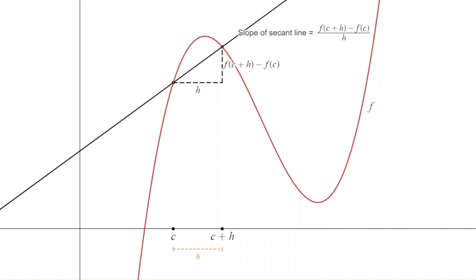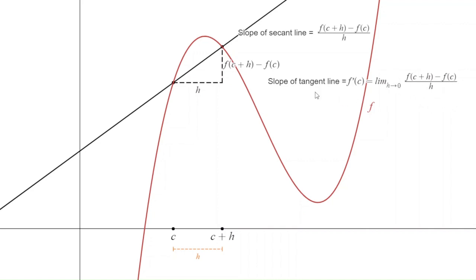To find the slope of the tangent line, we take the limit as h approaches 0 of this expression. As h approaches 0, the second point moves closer and closer to the first point — the horizontal distance between them approaches zero. So the slope of the tangent line, denoted f'(c), is defined as the limit as h → 0 of [f(c + h) − f(c)] / h, which represents the slope of the secant line.